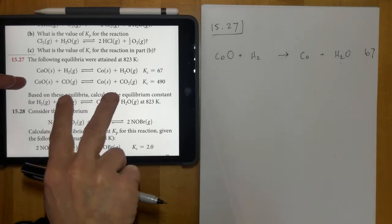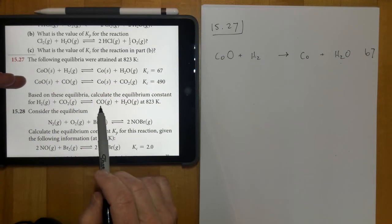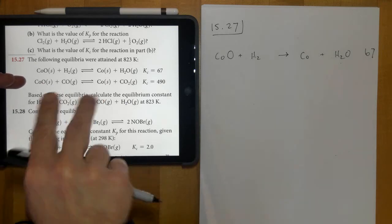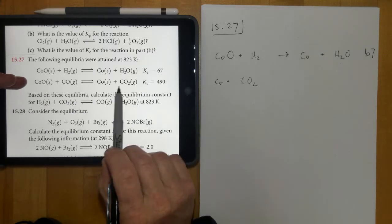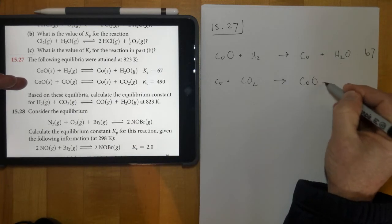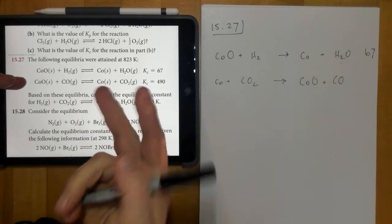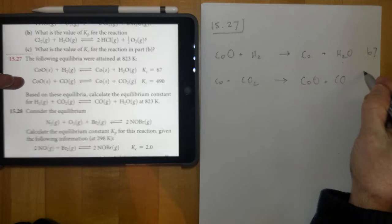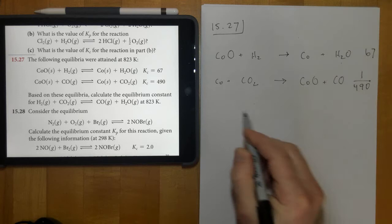And then let's take the second equation and let's flip it around because we've got to get CO on the right-hand side over here. And so if we reverse this reaction, we have a CO on this side and a CO2 on this side. And then we have an arrow and then we have a COO and a CO over here. And this K now, since we reversed the reaction, would be the inverse of the K. So that would be 1 over 490.